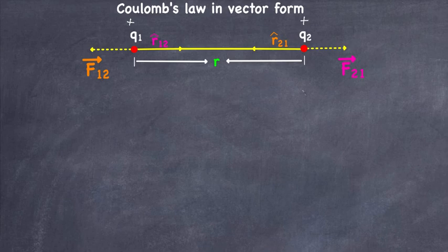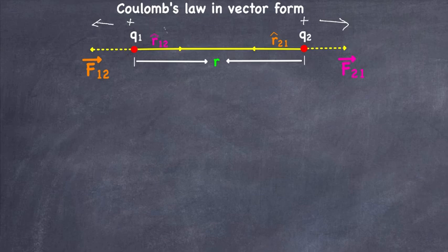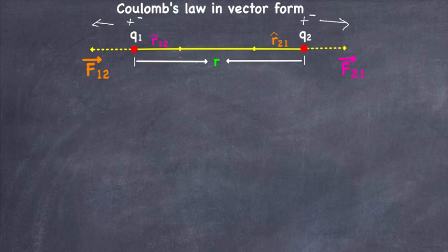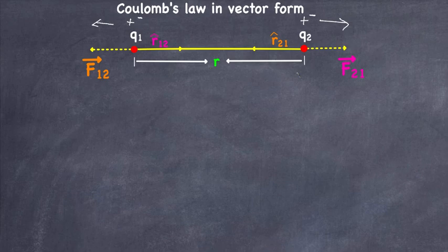We all know like charges repel each other. That's why one force is in this direction and the other force is in this direction — they are repelling each other, they want to go away from each other. So we got two charges, both the same sign, and they are going to repel each other.